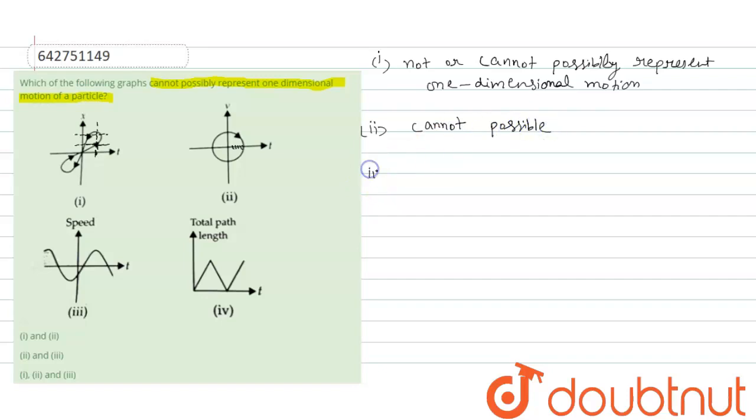And third, it also does not represent because in this case, the particle also has negative speed, which is not possible.